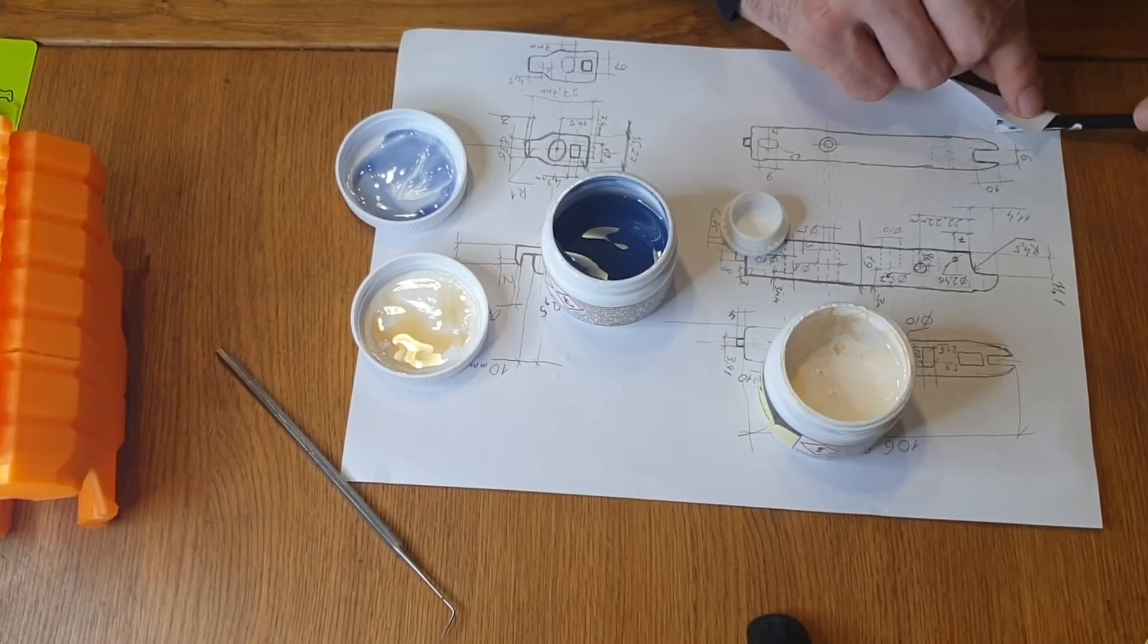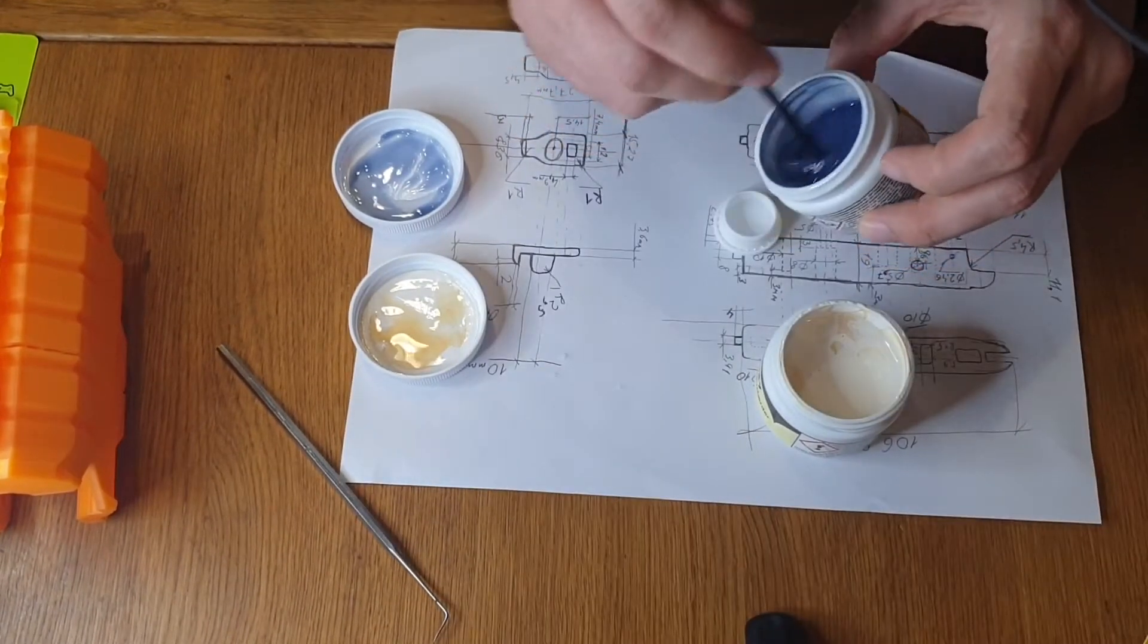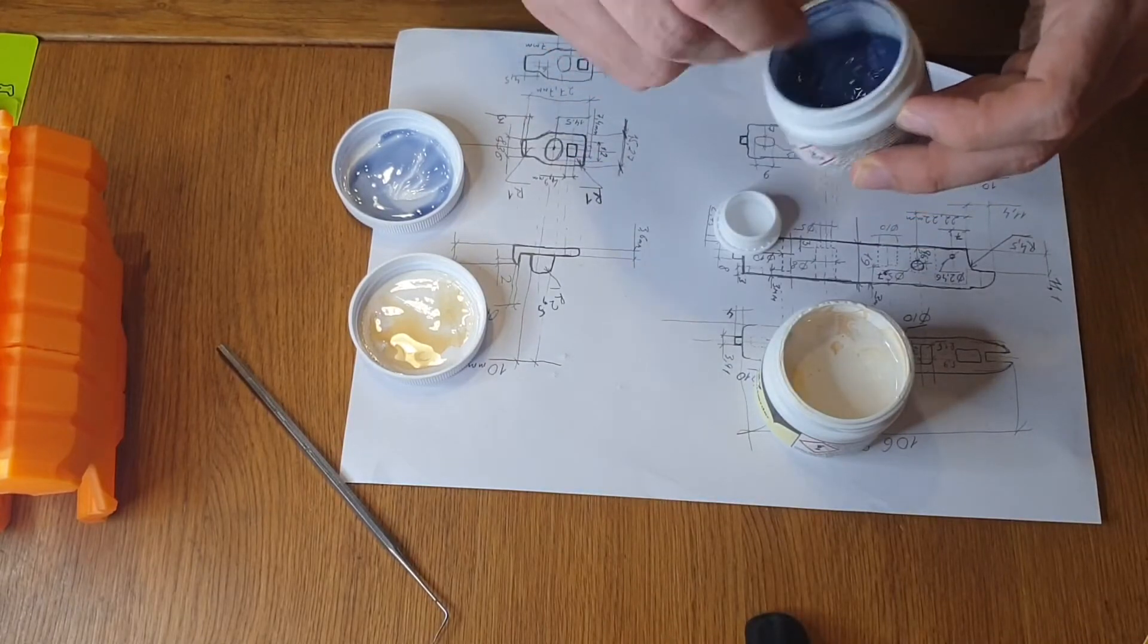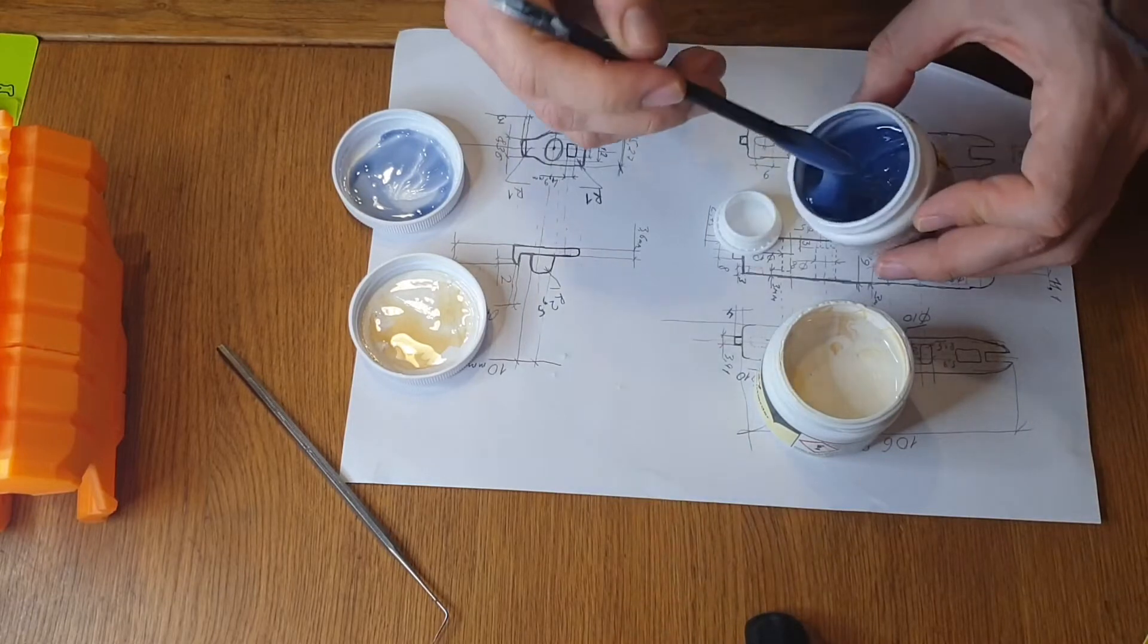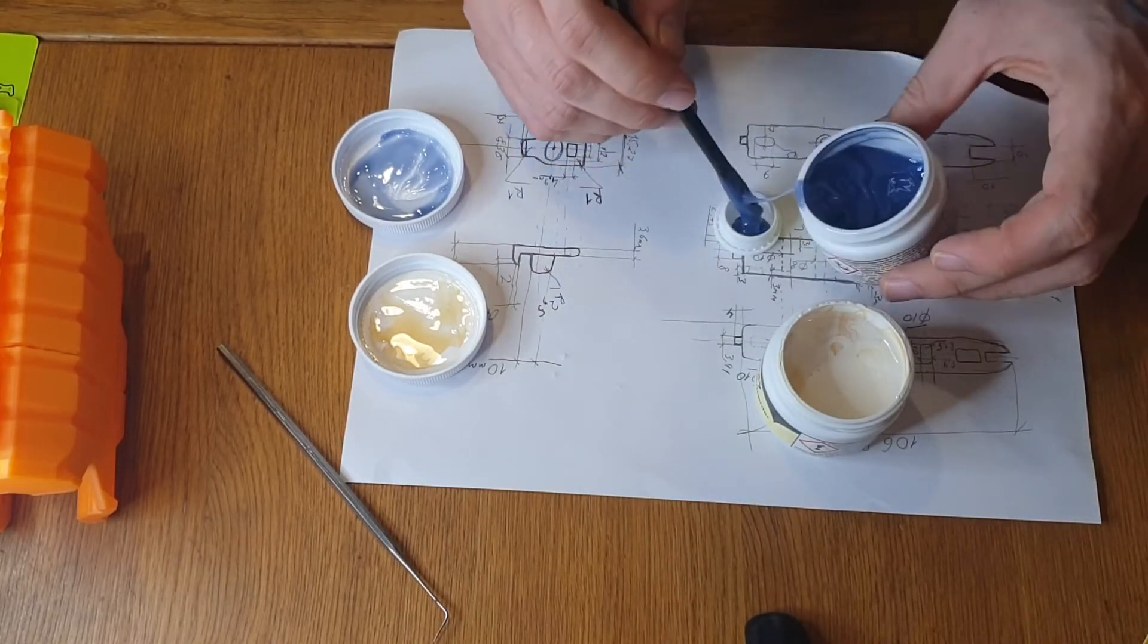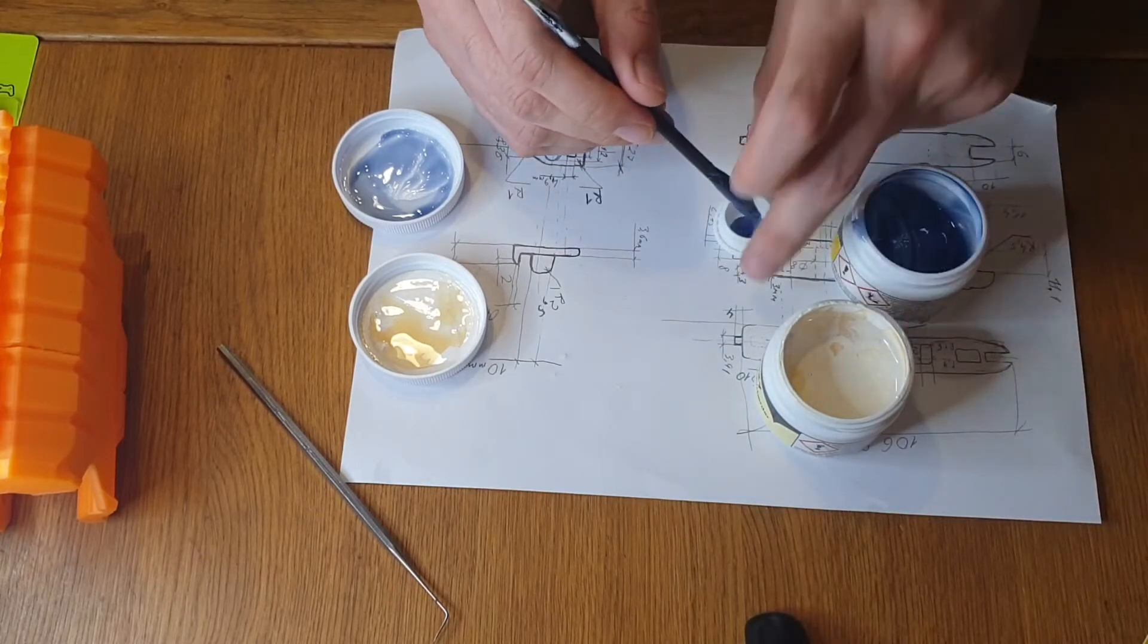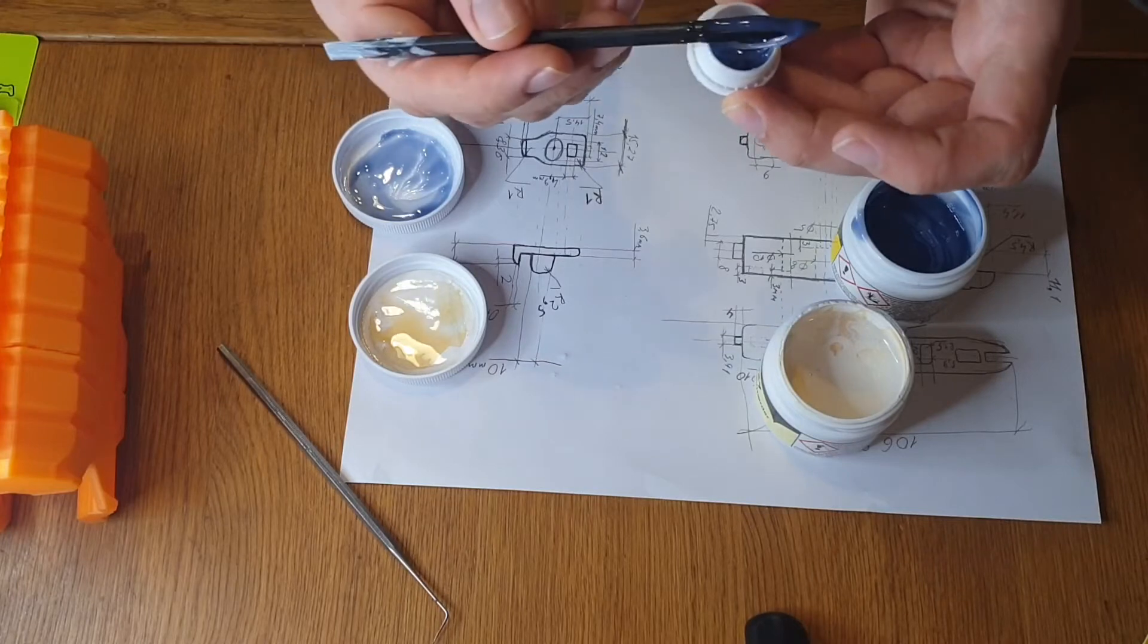So I'll clean my spatula and do it all over again. I'll first actually mix it as well, because it was standing still for quite a while. Now it looks good, and I just put in, I mean, half of this volume.